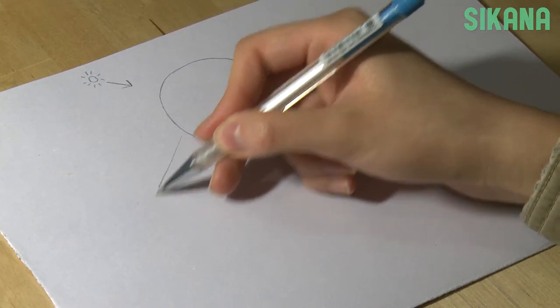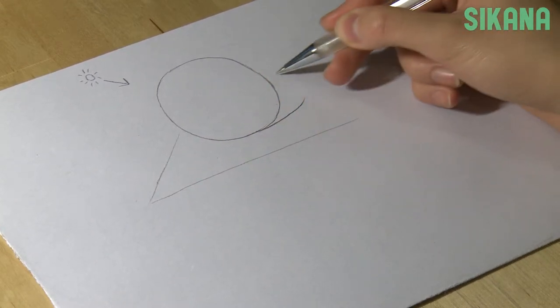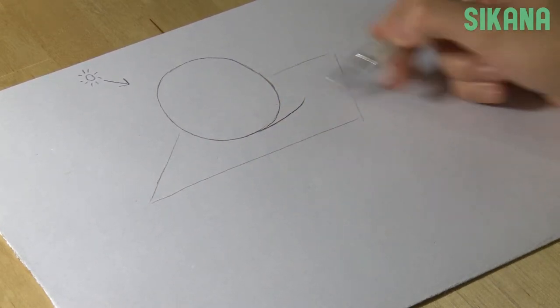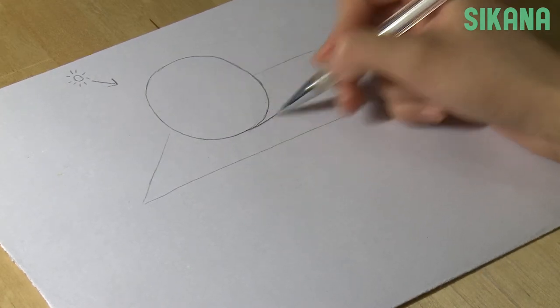The shape of the shade will also depend on the shape of the ground's surface. Here, we're going to have a flat surface, so the shade will be flat.